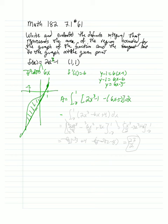And that's going to give us the integral from negative 2 to 1 of 2x cubed minus 6x plus 4 dx.